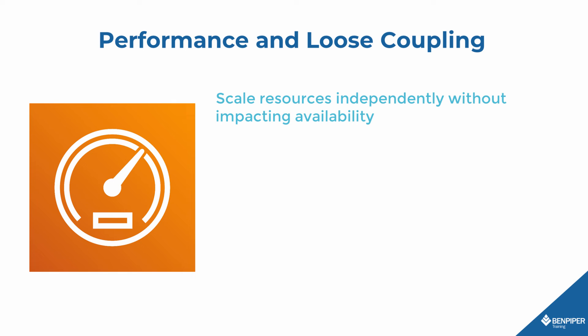Loose coupling has a really interesting and important side effect: it improves performance by letting you scale components up or down independent of one another. For example, suppose your EC2 instances are underpowered — they don't have enough RAM or processing power, and it takes a long time to process a video, so you need to upgrade your EC2 instance classes. Upgrading an instance class requires restarting the instance, but that's not a problem with loose coupling. You just upgrade one instance at a time, take one instance offline, and let the ELB route traffic to the remaining available instances. You can upgrade the instances one at a time without impacting the application's availability.